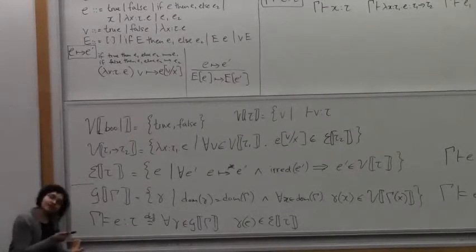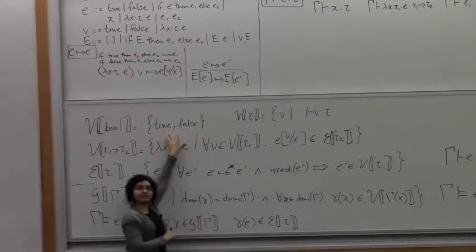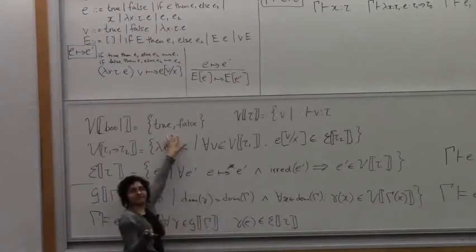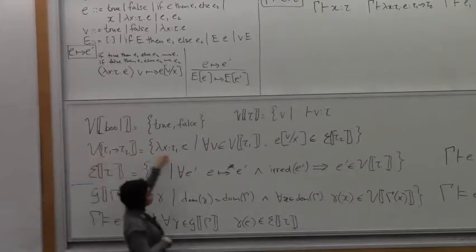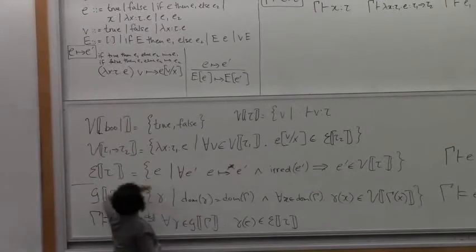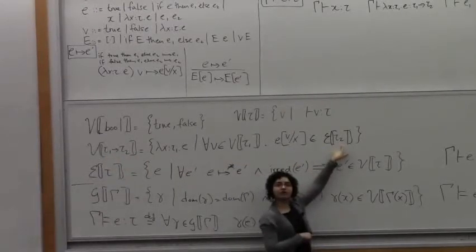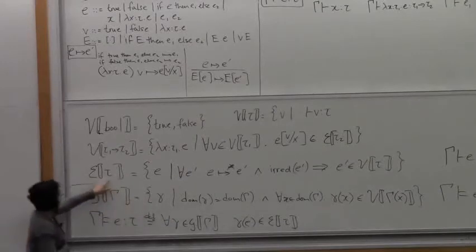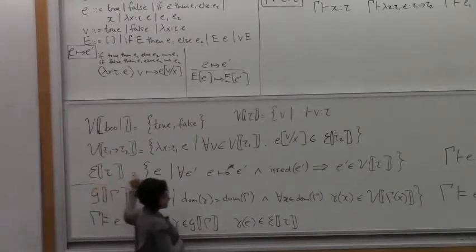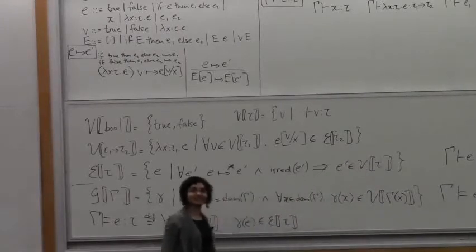Let's look at why this is well-founded. We define V of bool — that's our base case. It doesn't use V of bool or V of anything or E of anything. The definition for function types is well-founded because it appeals to V of tau 1, but tau 1 is a smaller type than tau 1 arrow tau 2. And here it appeals to E of tau 2. E of tau 2 appeals to V of tau 2, and V of tau 2 is smaller than V of tau 1 arrow tau 2 — tau 2 is smaller than tau 1 arrow tau 2. So it's well-founded.